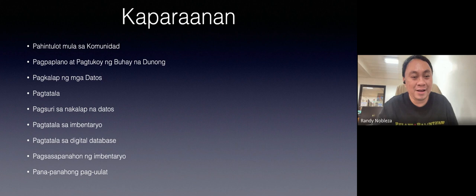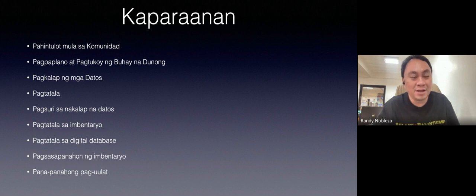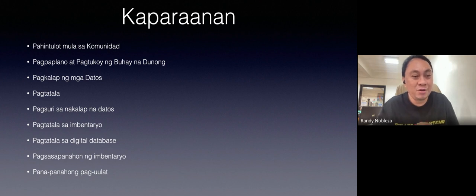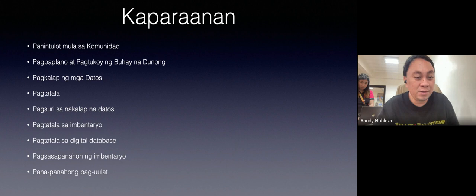Step three is data gathering. Cultural mapping has already been conducted in the towns of Boac, Santa Cruz, and Gasan, and partially in Mogpog and Buena Vista, so we already have some data to facilitate our data gathering. Step four is to document what has already been done — we don't start from scratch. We pick off from where previous researchers left off. If work has been done in Boac, Mogpog, and Buena Vista, we will consider their existing documentation.